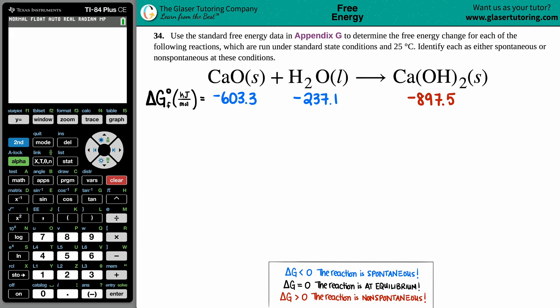Number 34: Use the standard free energy data in Appendix G to determine the free energy change for each of the following reactions, which are run under standard state conditions at 25 degrees Celsius. Then identify each as either spontaneous or non-spontaneous at these conditions.